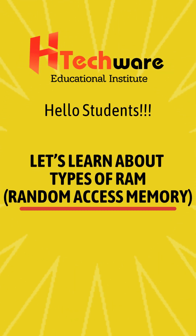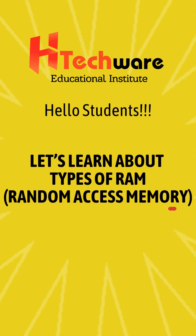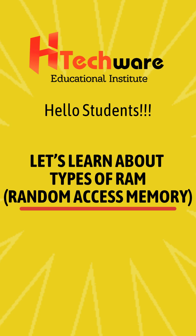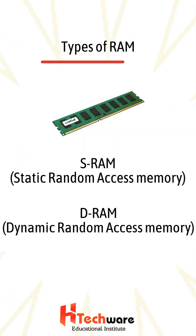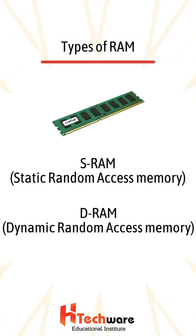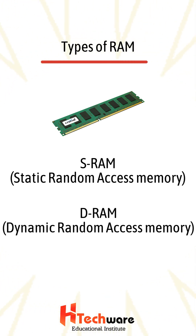Hello students. Let's learn about types of RAM. Types of RAM: SRAM, Static Random Access Memory, and DRAM, Dynamic Random Access Memory.